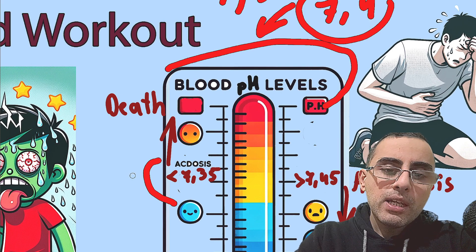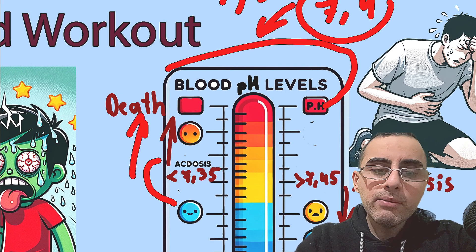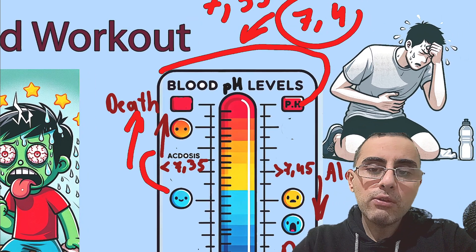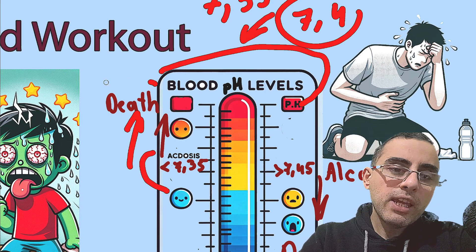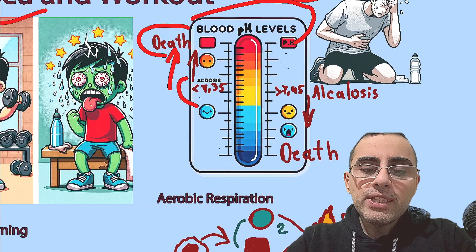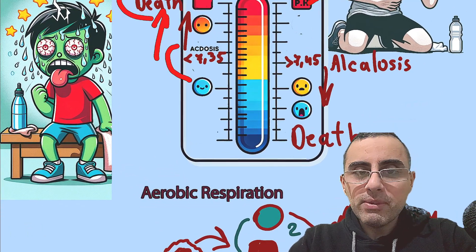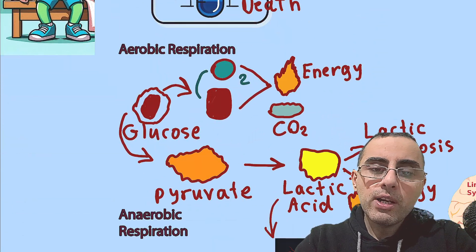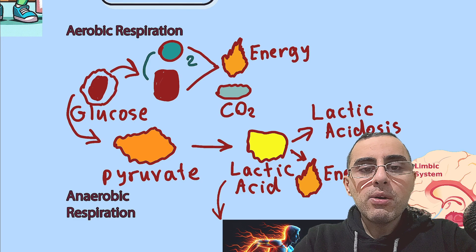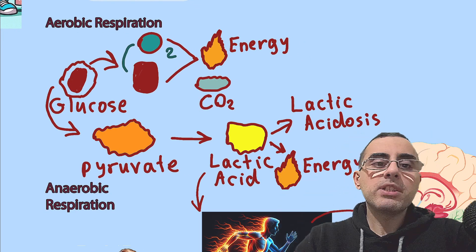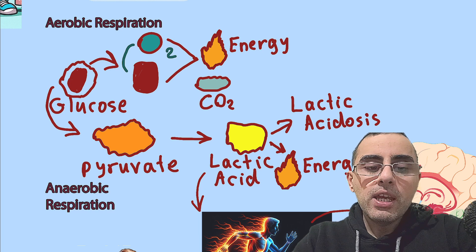This lactic acidosis causes these problems. If blood pH becomes very acidic, eventually a person could die, but such cases are extremely rare after a workout — they can result from other problems, not from exercise. Now let's look at why blood pH drops during workout.